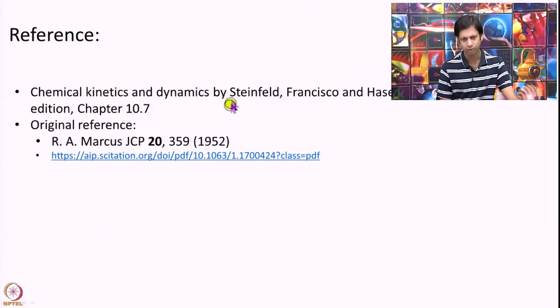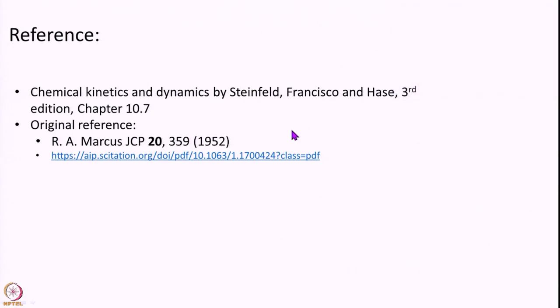The history of this work is as follows. In the late 1920s — 1927 and 1928 — Rice, Ramsberger, and Kessel formulated this theory for unimolecular decay. They were trying to understand how to calculate the rate constant for a molecule decaying at constant energy and match experimental data. We studied their efforts in the last two modules, but that model does not work well — it is a very simple model with a lot of deficiencies.